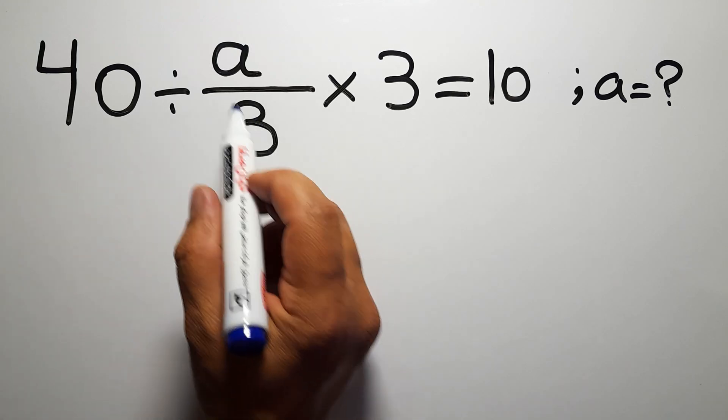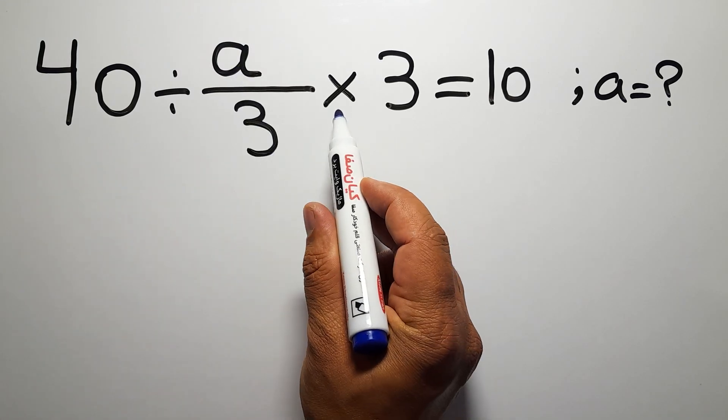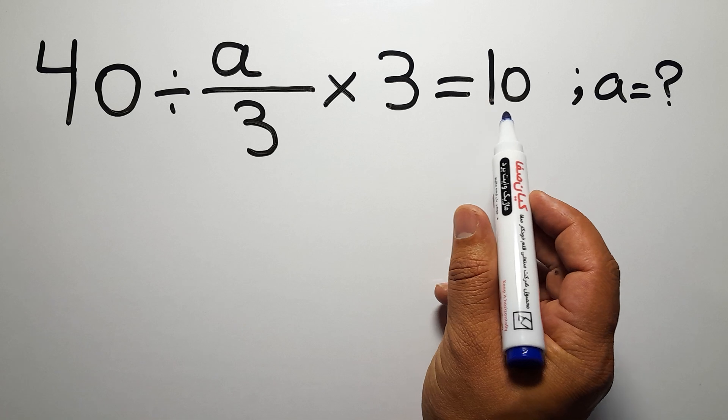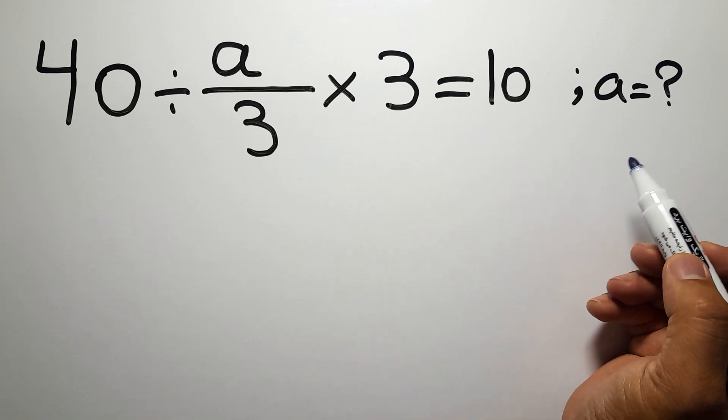40 divided by a over 3, times 3, equals 10. Our goal is to find the value of a.